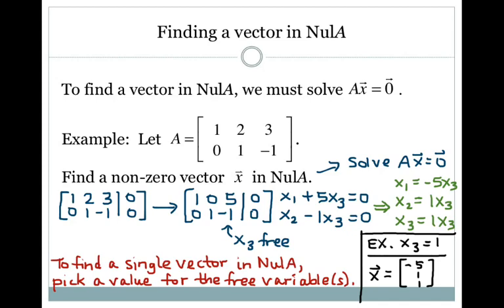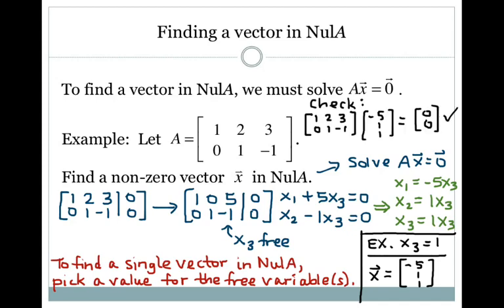My claim is that this is a solution to AX equals zero, so it's in the null space of A by definition, since the null space is all solutions to AX equals zero. I can check by multiplying A times X and making sure it comes out to be the zero vector. I found a solution, checked it, and I'm done.